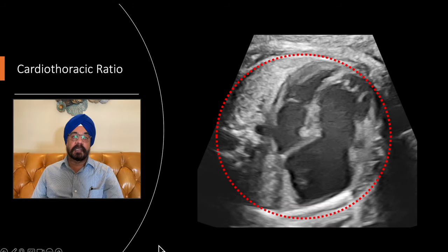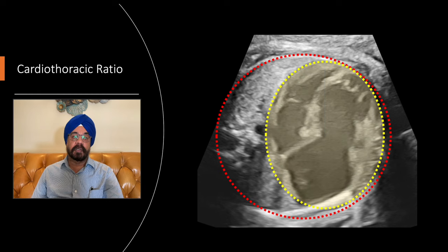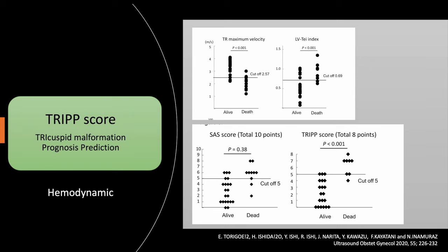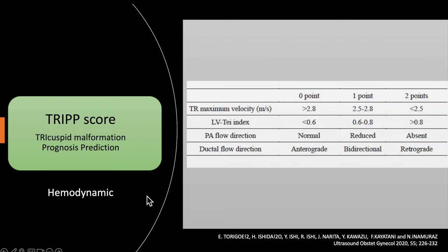The cardiothoracic ratio in our patient is not in favor. However, the best score to use is the TRIP score, which includes all hemodynamic features without relying on anatomical structures. Comparing it with the SAS score, the TRIP score is a very good discriminator between fetuses that will survive and those that won't, using a cutoff of about five. The TRIP score is probably the best of all.